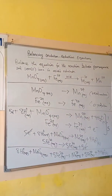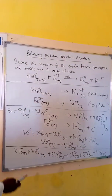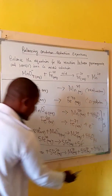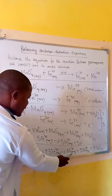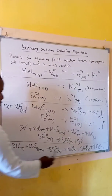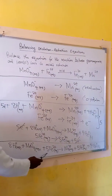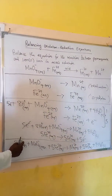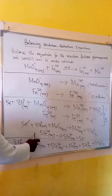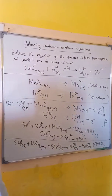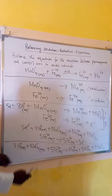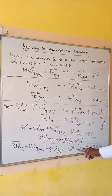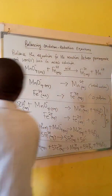We can now verify the equation is balanced. Checking atoms: eight hydrogens on each side, one manganese on each side, four oxygens on each side, and five iron on each side. Checking charge: on the left, positive eight minus one plus ten equals positive seventeen. On the right, five times three plus two equals seventeen. The equation is balanced.